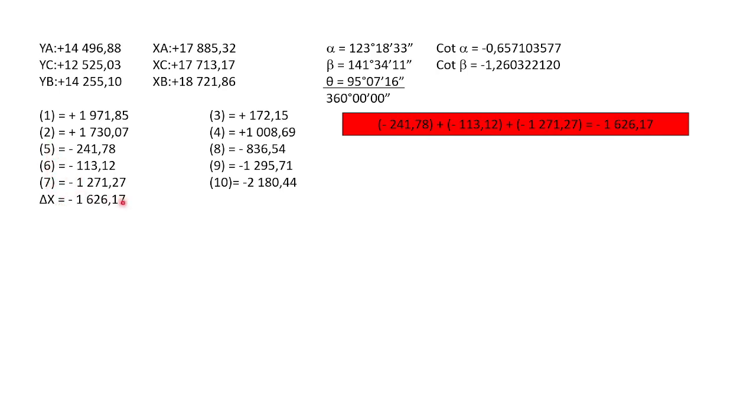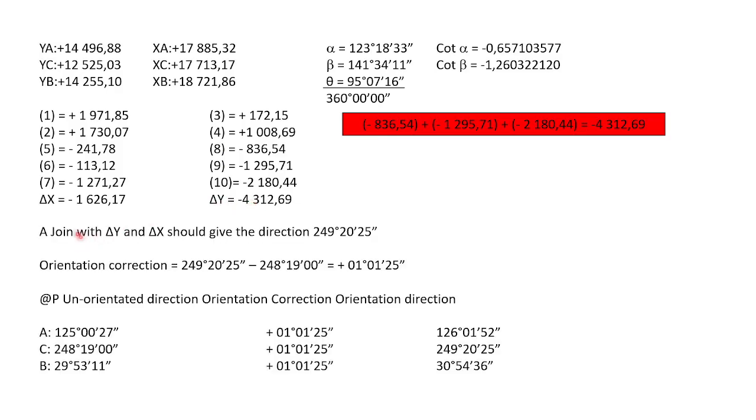Then you add five, six and seven and you'll get your delta X, and you'll add 8, 9 and 10 together and you'll get your delta Y. Then the last step for this video, join for delta Y and delta X should give the direction of 249 degrees, 20 minutes and 25 seconds. So you took those two as if you did a join, you calculated your orientated direction, which should be tan of Y over X. And then you say that orientated direction minus your observed direction equals this correction. So then we take this correction and we add it to each of our observed directions.